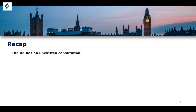As a basic recap from the last lesson, we have an uncodified Constitution. It is more accurate to say it is uncodified rather than unwritten, because there is a distinction between the two. Unwritten implies that no part of the UK Constitution is written down, which is not true. Uncodified simply means that it is not all written down in one single place, in one single document.